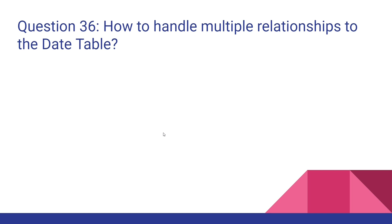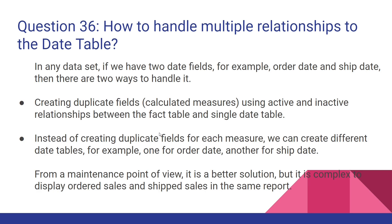How do you handle multiple relationships to the date table? If the dataset has two date fields, for example order date and ship date, there are two ways to handle it. First, create calculated measures using active and inactive relationships between the fact table and a single date table. Alternatively, create different date tables — one for order date and another for ship date. From a maintenance point of view this is a better solution, but it is complex to display order sales and ship sales in the same report, so choose based on your project requirement.